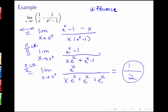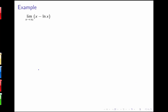Notice our process: we took a difference, turned it into a quotient, and applied L'Hôpital's rule. Now let's look at another difference example: the limit as x goes to infinity of x minus ln x. Plugging in infinity gives infinity minus infinity. It's not immediately clear how to combine these. You might think about multiplying by a conjugate (x plus ln x over x plus ln x), but that doesn't turn out to be helpful in this case.